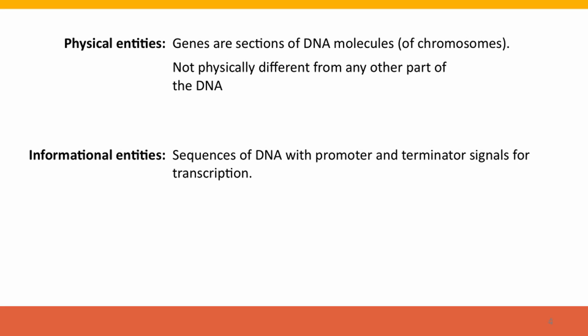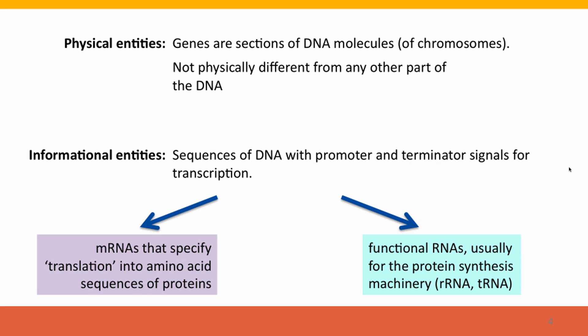Their informational properties that make them genes are, first, that they have signals called the promoter and the terminator, which are short sequences that direct proteins to carry out the process of transcription to make an RNA copy of this part of the DNA. Typically, they also have, within the sequence between the promoter and terminator, sequences that specify specific amino acids for translation, for formation of protein, including signal sequences that say make this into a protein. So this is by far the majority of genes.